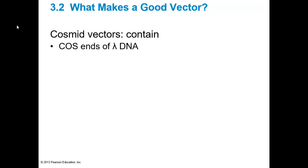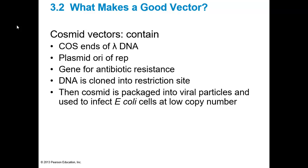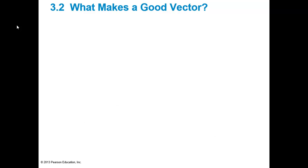The next size up is a cosmid vector. It also has cos sites of lambda DNA and a plasmid origin of replication. The cosmid vector is essentially lambda DNA without the virus particle itself. You put a gene for antibiotic resistance, so it will grow on antibiotic-containing media in bacterial cells. Your DNA of interest is cloned into restriction sites, and then the cosmid can be packaged into viral particles and used to infect E. coli cells at low copy number. Antibiotic selection ensures only bacteria containing the cosmid will grow, allowing you to clone large fragments up to 40 kb.